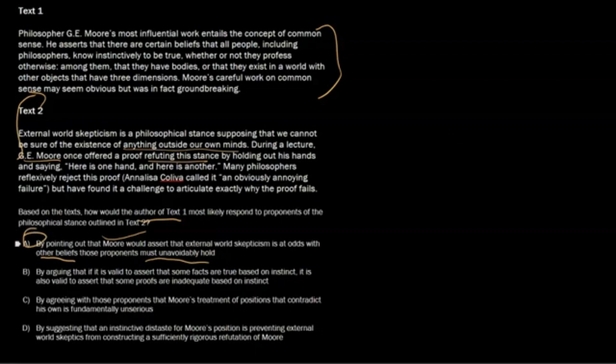All right, why is this? Because Moore is asserting that to think about this, to even think about external world skepticism, you can't be sure of anything. So to be sure of anything, you need to have your basis. You need to be sure of something to be sure of anything. So I would say this is A. Now, this is pretty philosophical, right? We're getting kind of deep here. But by B, so by arguing that it is valid, if it is valid to assert some facts are true based on instinct, it is also valid to assert that other proofs are inadequate based on instinct. Well, this isn't really what he's offering up. There's not too much on instinct here. The main choice is definitely not on instinct, and this one doesn't even really mention instinct. So he's not going to respond to text 2 by talking about instinct when text 2 didn't even talk about instinct.